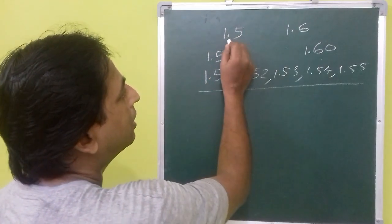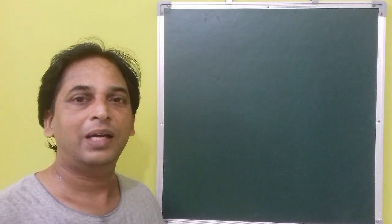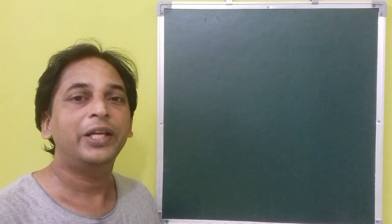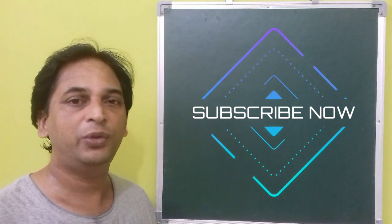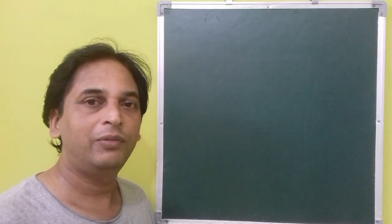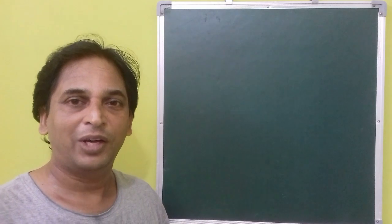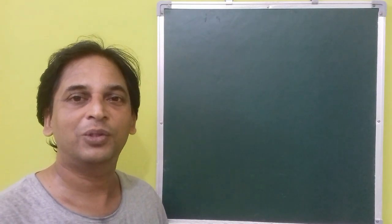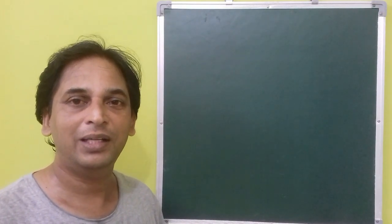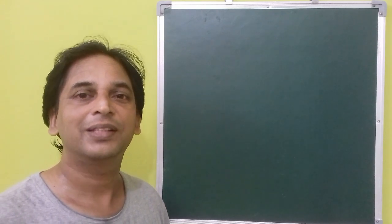From these examples we have seen that there are infinite rational numbers between any two rational numbers. Detailed videos are uploaded on this channel every day — if you are not subscribed, please do subscribe and hit the bell icon so you get notified when a new video is released. Thank you very much.